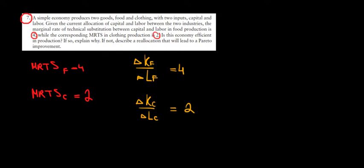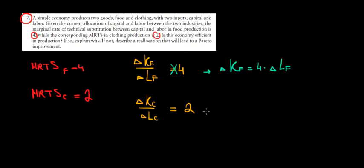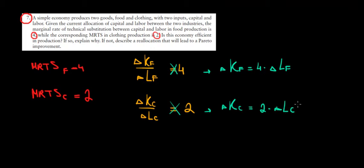Now let's work with the cross product to see what this means. Rearranging, the change in capital of the food company equals 4 times the change in labor of the food company. Similarly, the change in capital of the clothing company equals 2 times the change in labor of the clothing company.